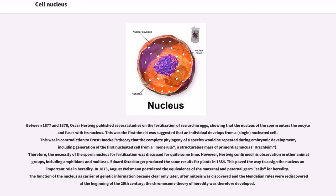Therefore, the necessity of the sperm nucleus for fertilization was discussed for quite some time. However, Hertwig confirmed his observation in other animal groups, including amphibians and mollusks. Edward Strasburger produced the same results for plants in 1884. This paved the way to assign the nucleus an important role in heredity. In 1873, August Weismann postulated the equivalence of the maternal and paternal germ cells for heredity. The function of the nucleus as carrier of genetic information became clear only later, after mitosis was discovered and the Mendelian rules were rediscovered at the beginning of the 20th century. The chromosome theory of heredity was therefore developed.